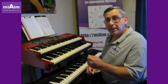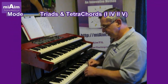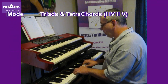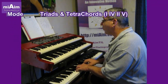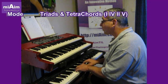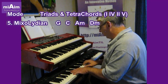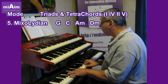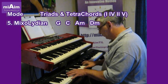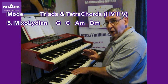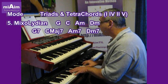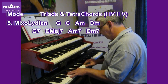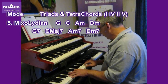The Mixolydian is 5 — it'll start on G in this case. It'll be tone, tone, semitone, tone, tone, semitone, tone. So the triads will be G, C, A minor, and D minor. The four note chords will be a G seventh, a C major seventh, an A minor seventh, and a D minor seventh.